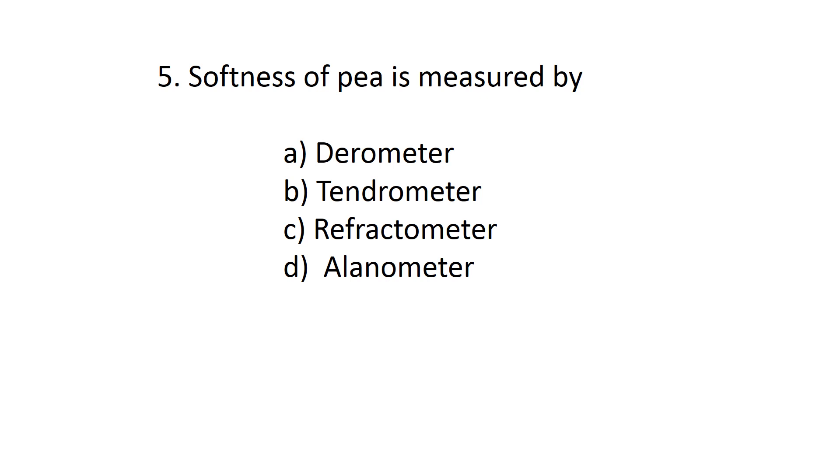Softness of pea is measured by option A: durometer, option B: tendrometer, C: refractometer, and D: alanometer.